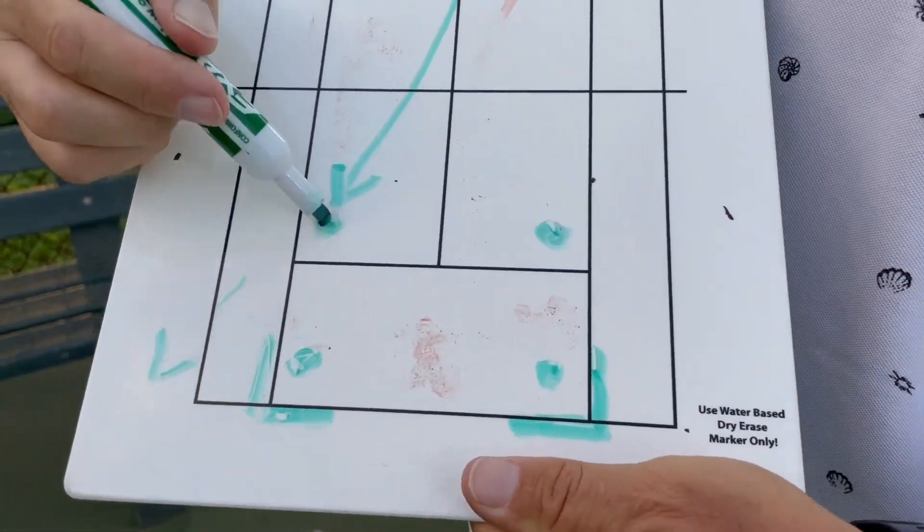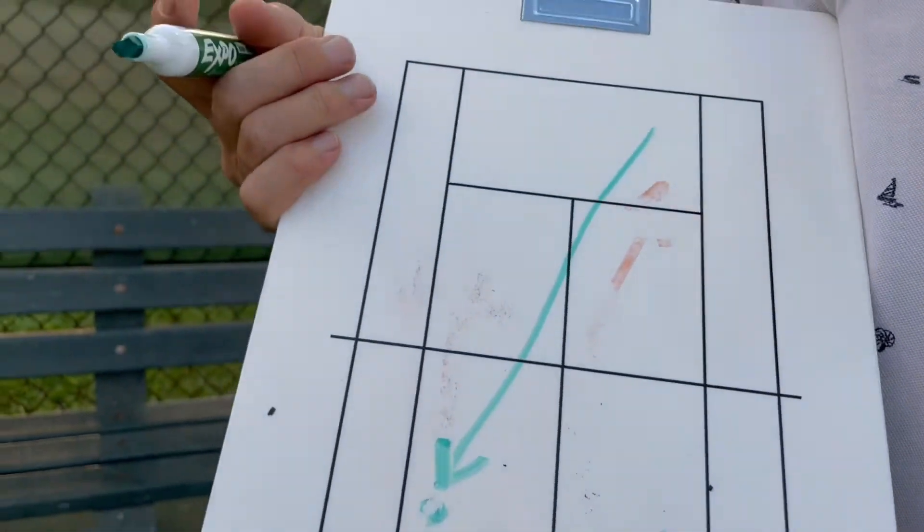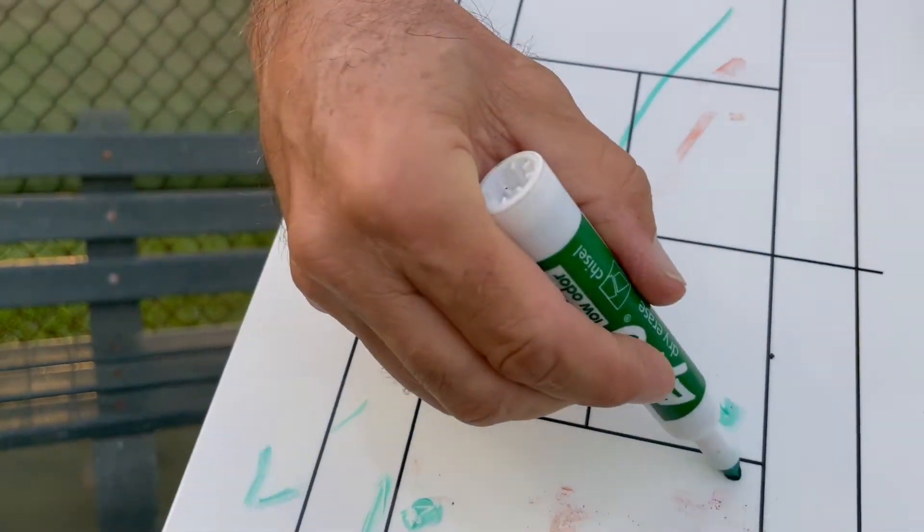But most of the balls that make points are here. They go out across. So you have to practice short top spin that goes in the box. Land the ball before this line.